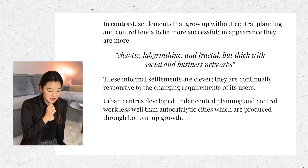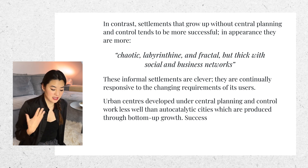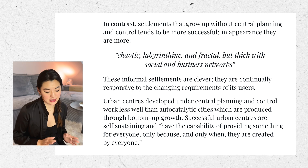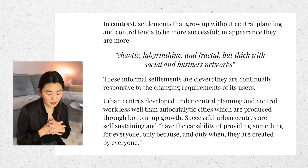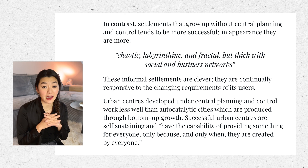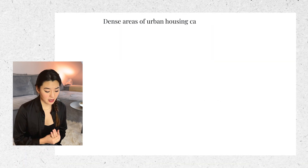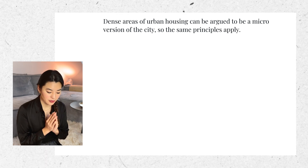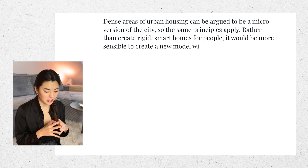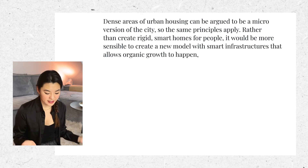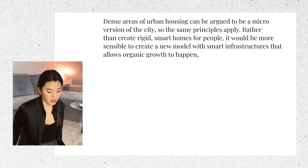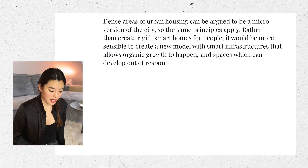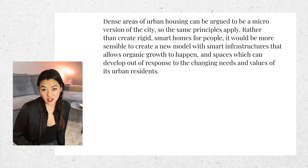Urban centers developed under central planning control work less well than auto-catalytic cities, which are produced through bottom-up growth. Successful urban centers are self-sustaining and have the capability of providing something for everyone, only because and only when they are created by everyone. Dense areas of urban housing can be argued to be a micro version of the city, so the same principles apply. Rather than create rigid smart homes for people, it would be far more sensible to create a new model with smart infrastructures that allows organic growth to happen.